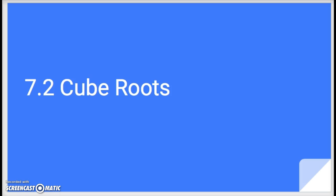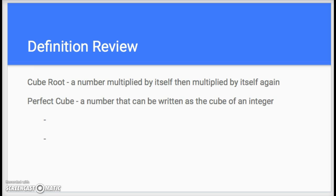First of all, we have just a straight definition of what a cube root is, and that is simply a number multiplied by itself and then multiplied by itself again. For instance, seven times itself times itself again.